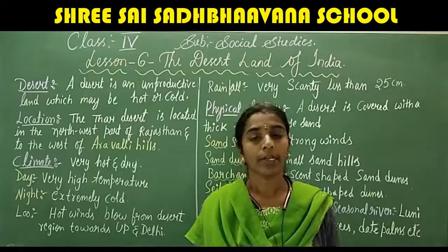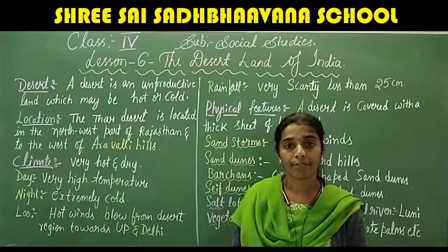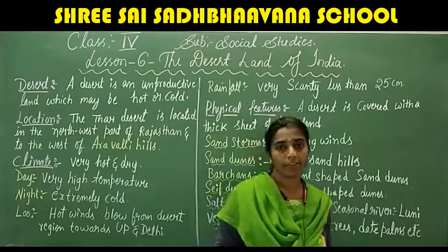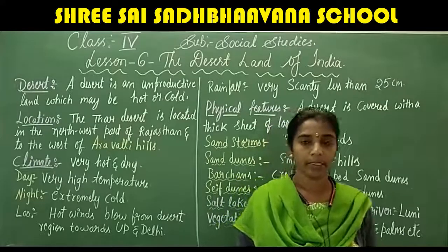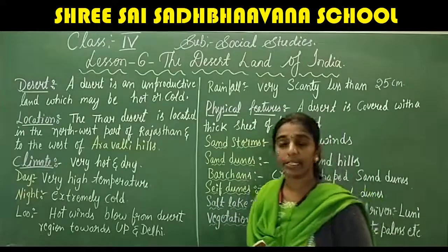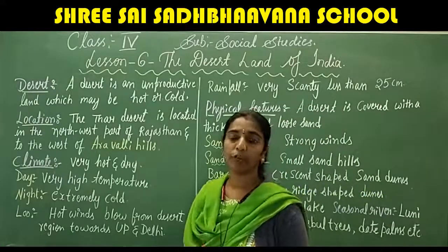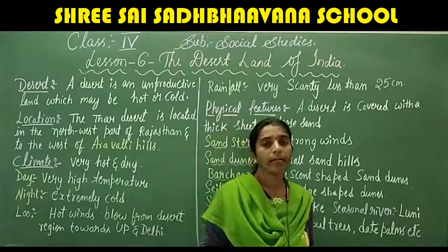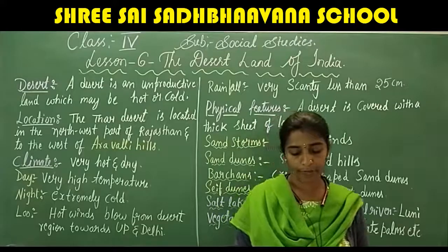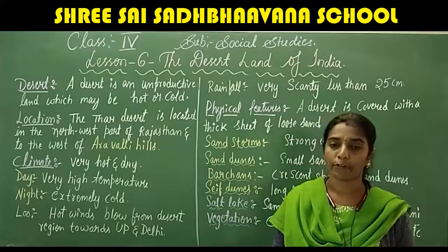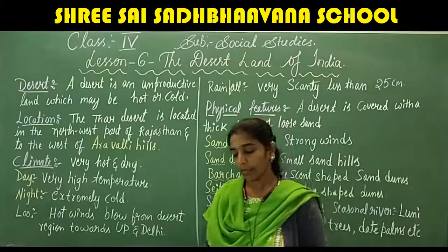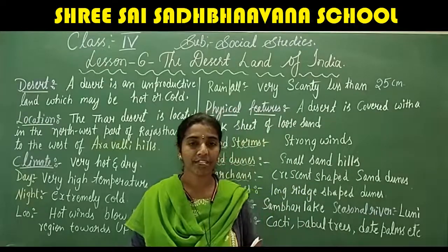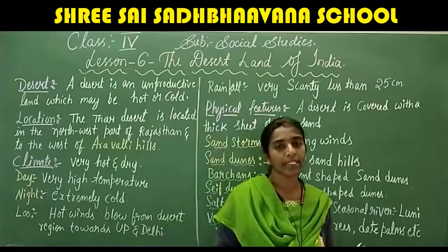Hello children. In the very first lesson I explained about the physical features of India. Our country is divided into five physical divisions: the Great Himalayas, the Board of Snow, the Fertile Plains of North India and the Southern Plateau, the Coastal Plains and Islands, and the Great Indian Desert — the Thar Desert.